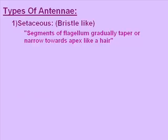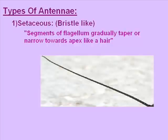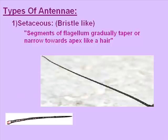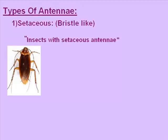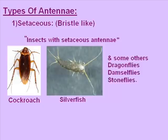Setaceous antenna means bristle-like — segments of the flagellum gradually taper or narrow towards the apex. In this picture we can see the flagellum segments are gradually tapering towards the apex, and the arrow is pointing towards the setaceous antenna. Insects with setaceous antennae are cockroaches, silverfishes, and some others like dragonflies, damselflies, and stoneflies.